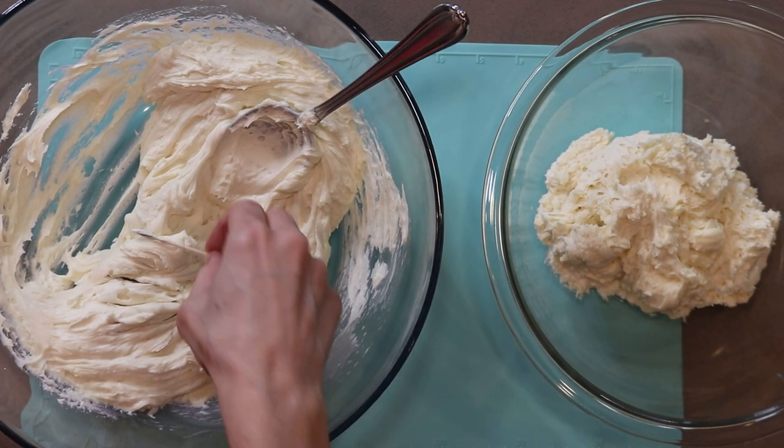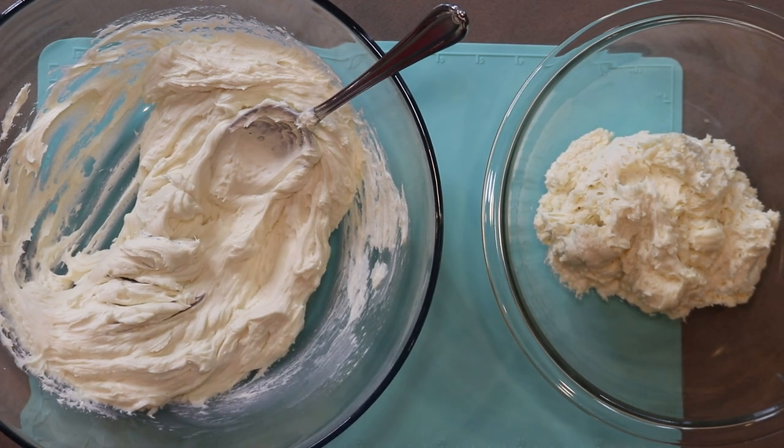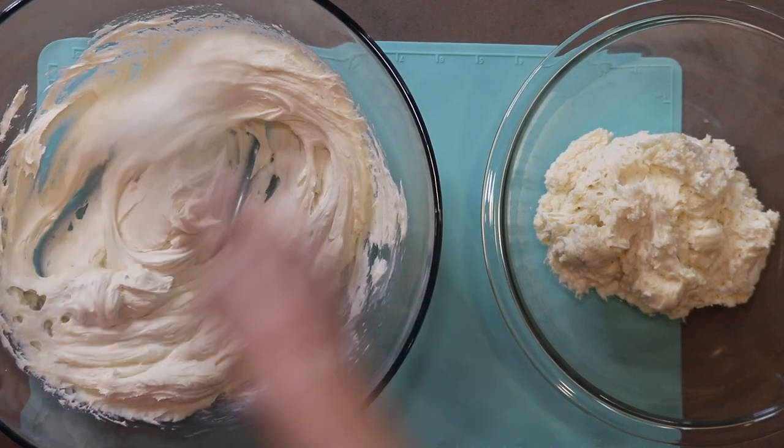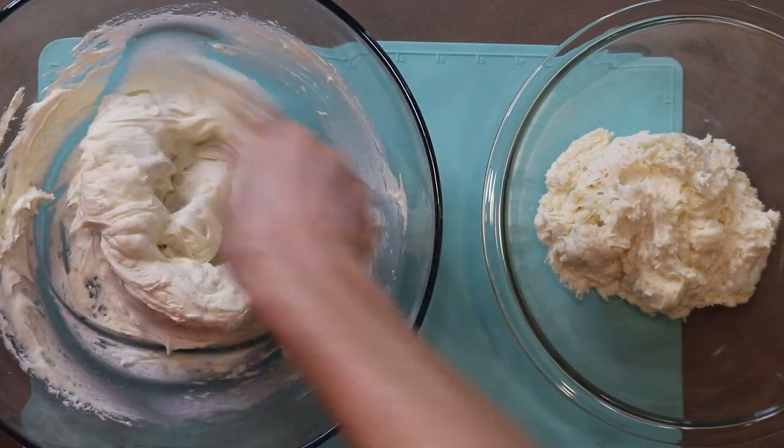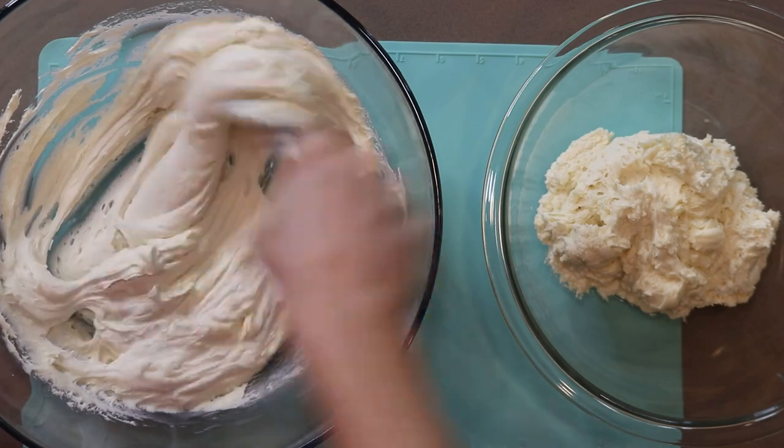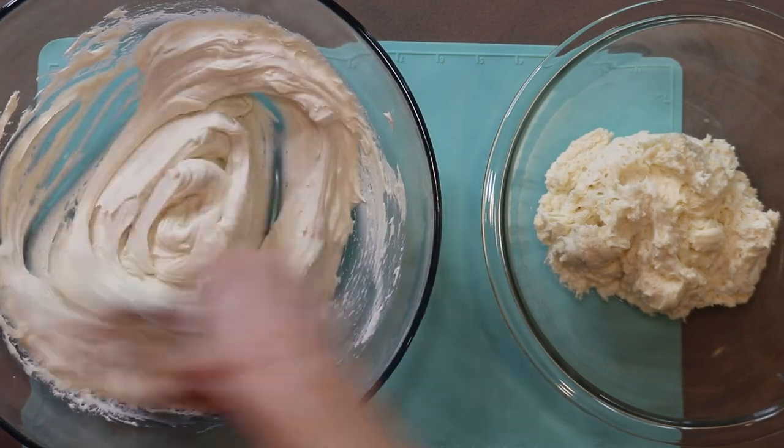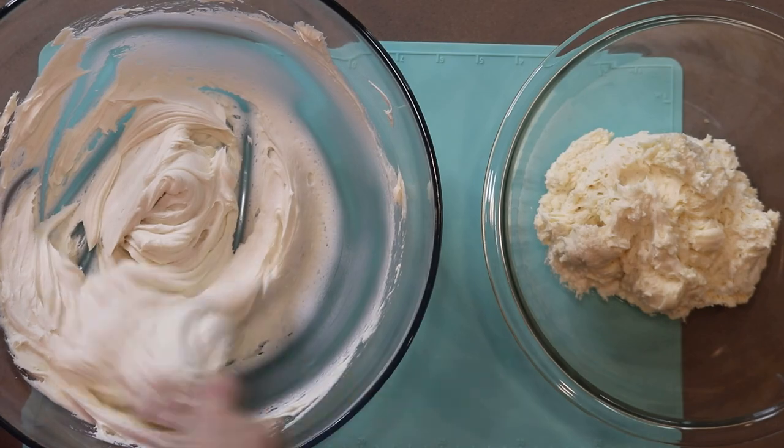This first bowl is my white frosting for the top of the Frappuccino. It had a slight yellowish tint to it from the butter, so I added just a tiny bit of purple food color gel into the buttercream, and I mixed that up, and that really helped to whiten it up a bit.